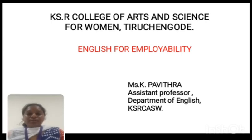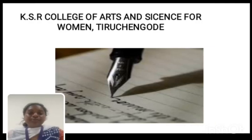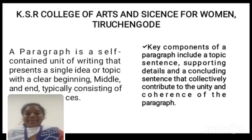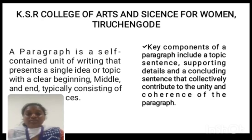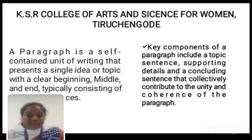We have already discussed the first part, and the second part continues with writing skill. A paragraph is a self-contained unit of writing that presents a single idea or topic with a clear beginning, middle, and end — typically consisting of a starting sentence, supporting details, and a concluding sentence. When you read a paragraph, you can identify all three of these elements.